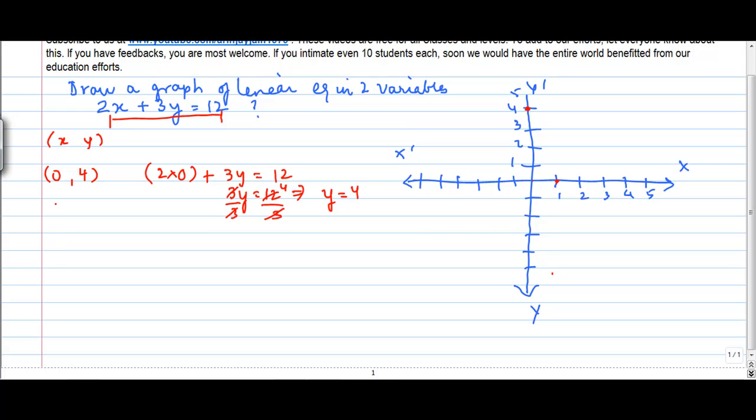Let's say y is equal to 0 in this equation. So then you get 2x plus 3 into 0 is equal to 12 or 2x is equal to 12 which implies, if you divide both the sides by 2, x is equal to 6. So another point that you get is 6, 0.